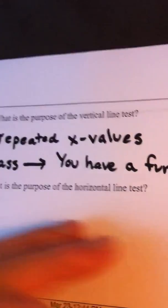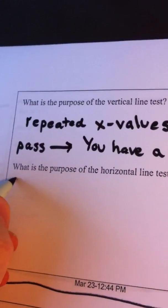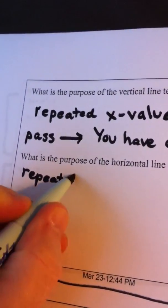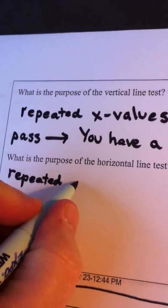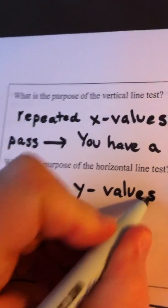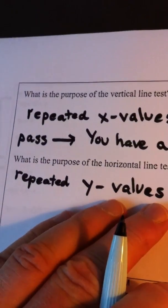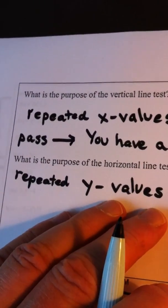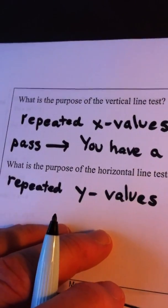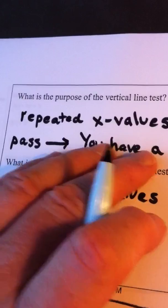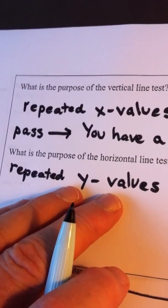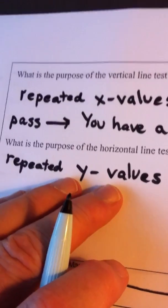So what is the purpose of the horizontal line test? A horizontal line is going to test for repeated y-values. The reason we want to test for repeated y-values is if there are repeated y-values, we're going to stop right there and say that the function we've just tested is not a one-to-one function, and when we go to invert it, it will not be a function.